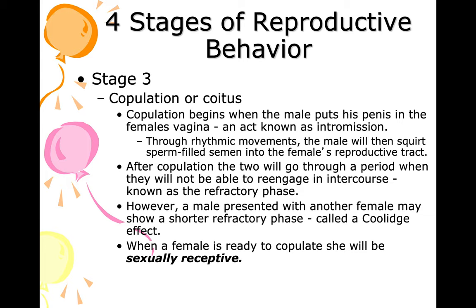When a female is ready to copulate, she will be sexually receptive. Males know by the odor and by the swelling in her vaginal region, if she is an animal other than a primate.